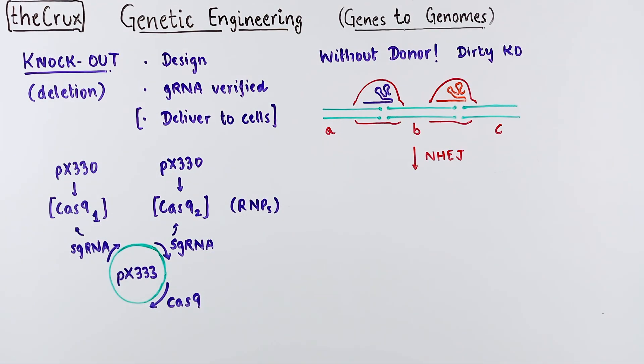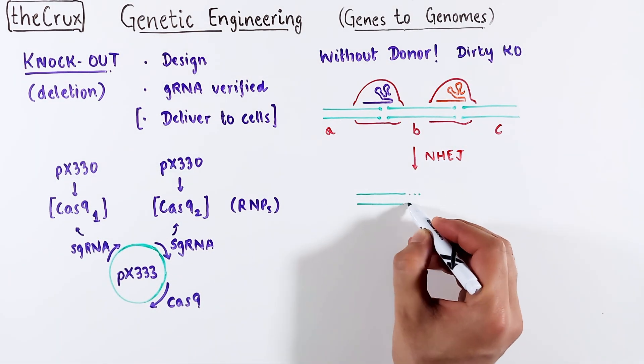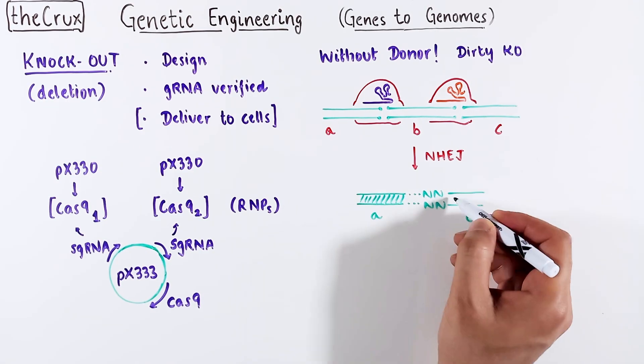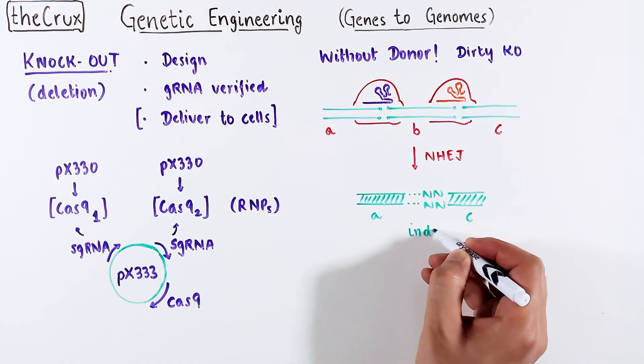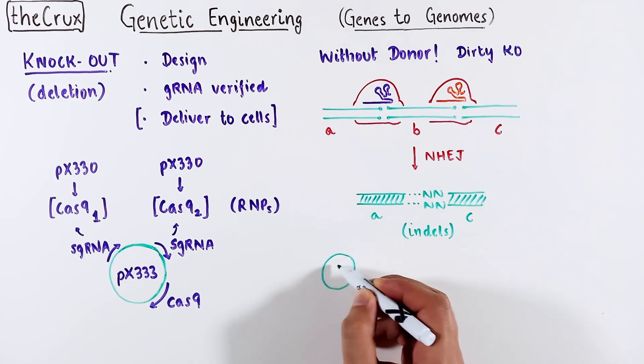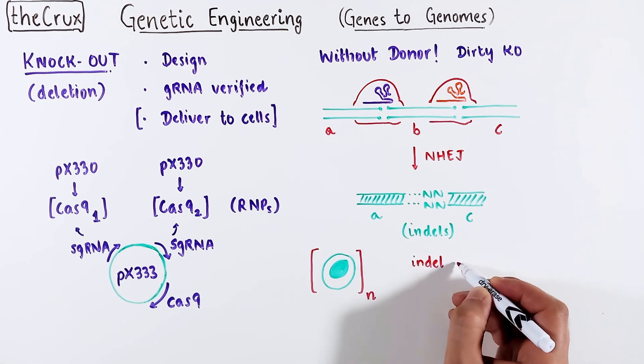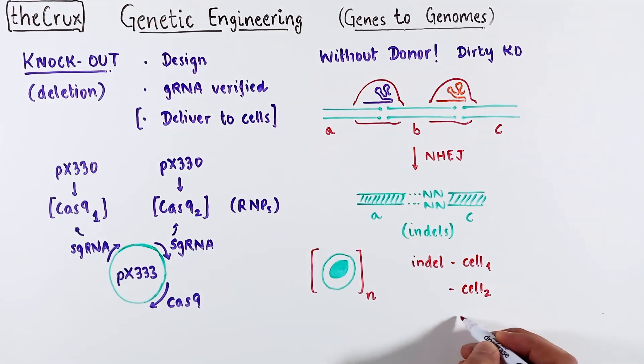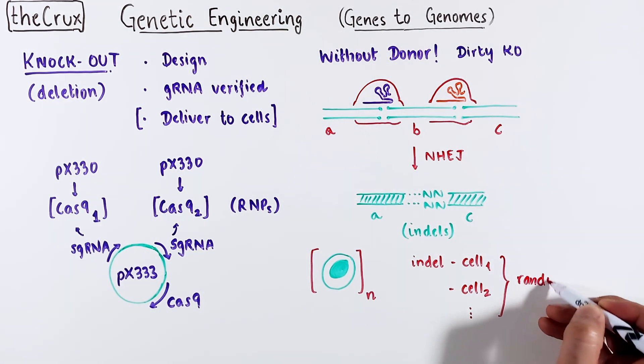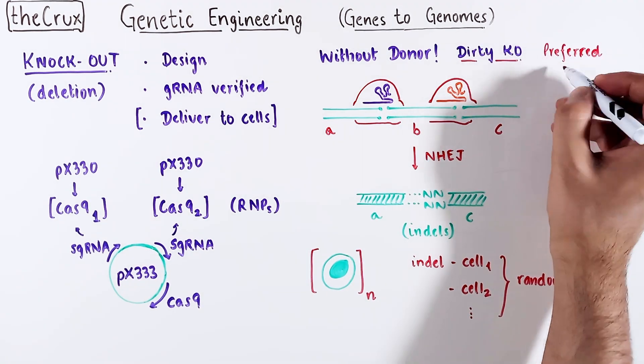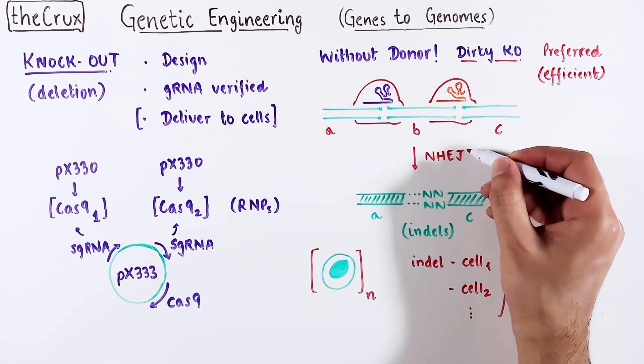The two Cas9s will make cuts at the target spots and end joining mechanism will paste the distal ends and in this process you expect the segment B to be removed from the genome. The pasting of A and C location will introduce indels into the genome. And because this experiment is done on thousands or millions of cells, each cell will potentially contain a unique and random indel. And that heterogeneity is why I call this a dirty KO. This is a preferred way to do a knockout.